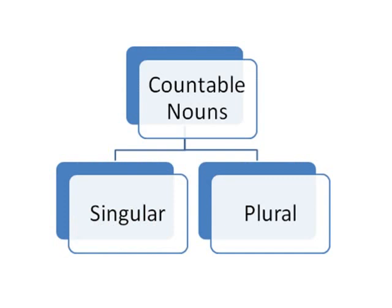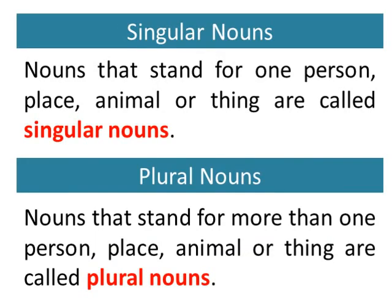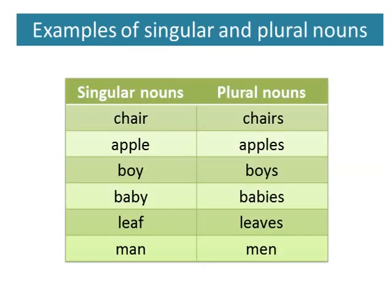Countable nouns can be singular or plural. Nouns that stand for one person, place, animal or thing are called singular nouns. Nouns that stand for more than one person, place, animal or thing are called plural nouns. Let's take some examples of singular and plural nouns.